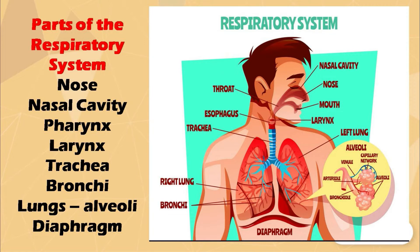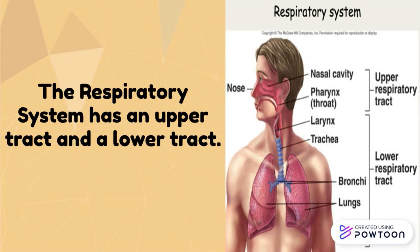Nose, nasal cavity, pharynx, larynx, trachea, bronchi, lungs which consists of the alveoli and diaphragm. The respiratory system has an upper tract and a lower tract.